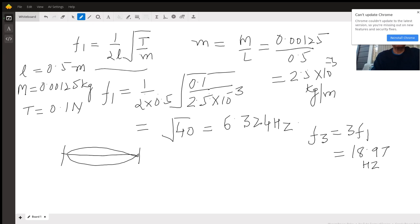So first of all let me get the value of mass per unit length or the linear density. Linear density is total mass of the wire divided by its length. So the mass of the wire is given as 0.00125 kilograms and the length is 0.5 meters. So the linear density becomes 2.5×10⁻³ kg per meter.